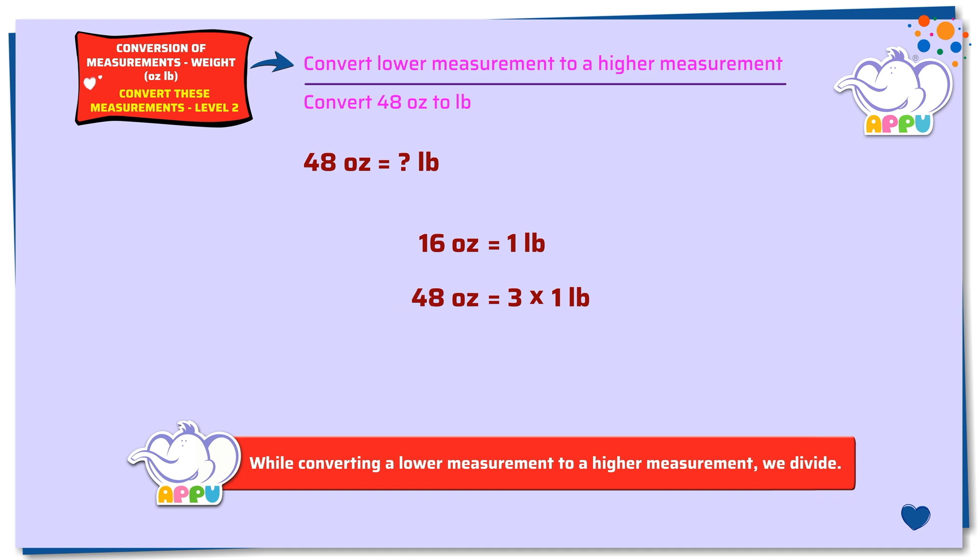3 times 1 pound equals 3 pounds. So 48 ounces equals 3 pounds. Much better!